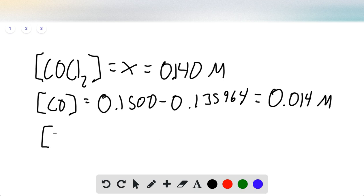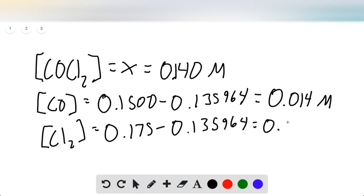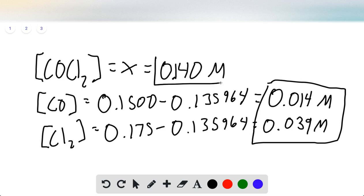Our equilibrium concentration of Cl2 is 0.175 minus that same X value, 0.135964, and that gives us a concentration of 0.039 molar. These are our correct values for the equilibrium concentrations.